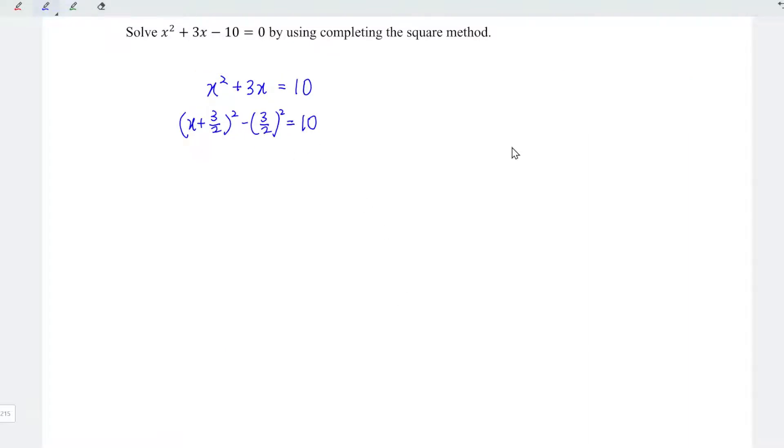Again, constants always move to the right. So let's rewrite the equation. We have x plus 3 over 2 squared is equal to 10, minus moves forward to plus. 3 squared is 9, 4 squared is 4, so we have 9 over 4. And this equals 49 over 4.